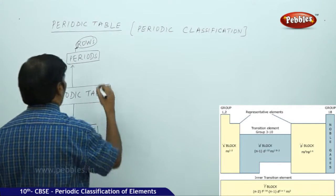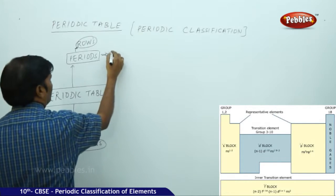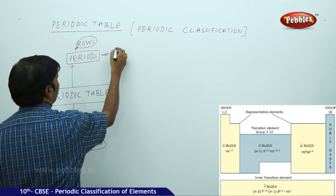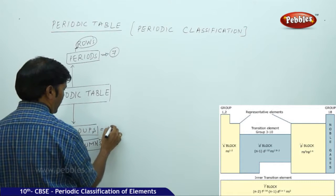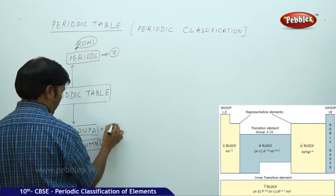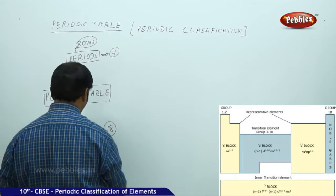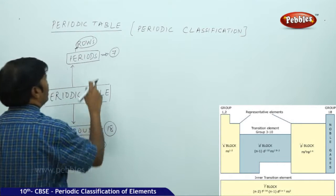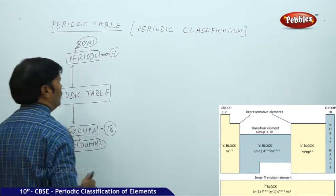There are 7 periods and 18 groups in the periodic table — 18 vertical columns and 7 horizontal rows.